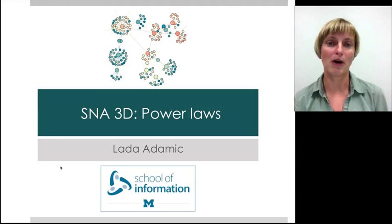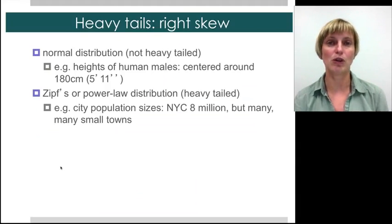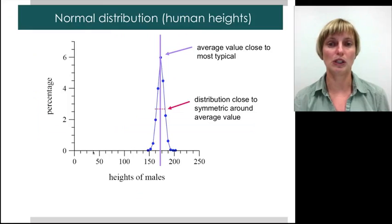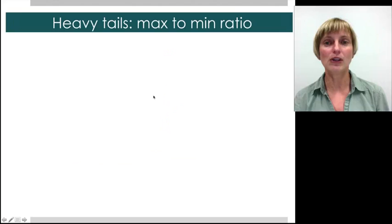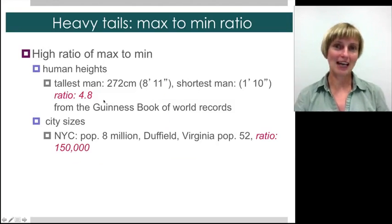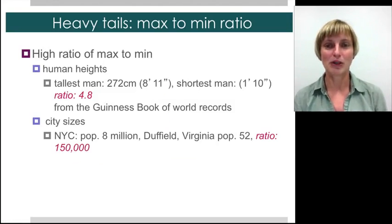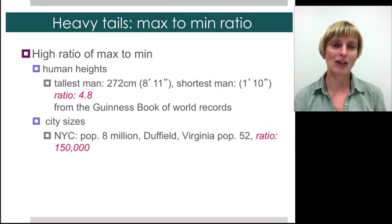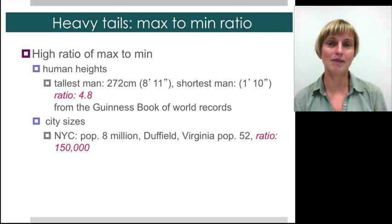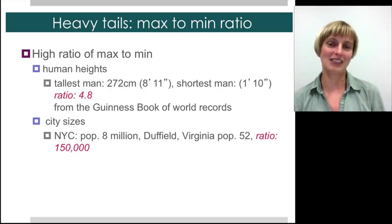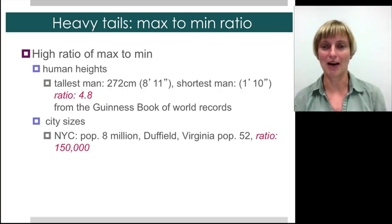So let's see what power laws are about. Power laws are different from the normal distribution. The normal distribution looks something like this — you have the average height for a human male, and some are taller and some are shorter. If you look at the max-to-min ratio, even looking at the Guinness Book of World Records, the tallest man is only several times taller than the shortest man. On the other hand, if you look at a city like New York City, it's 150,000 times larger than a small town of Duffield, Virginia.